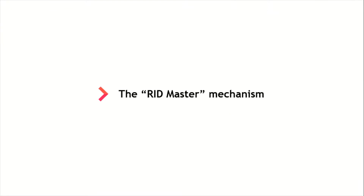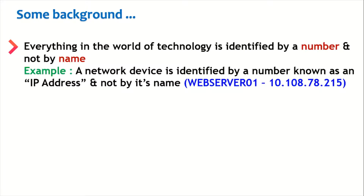Before diving into the RID Master mechanism, we must understand some basic technology concepts. Everything in the world of technology is identified by a number and not by a name. For example, a network device is identified by a number known as an IP address and not by its name. For example, a device named Web Server 01 is not identified by that name — instead it is identified by a number associated with it, such as 10.108.78.215.